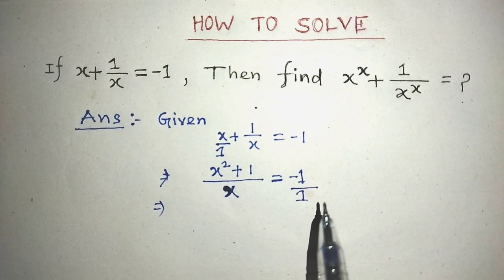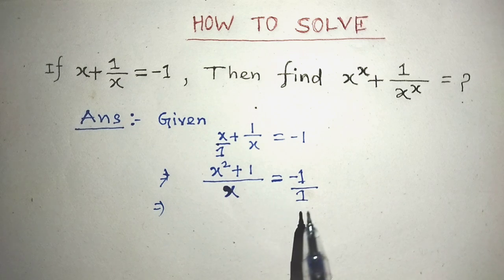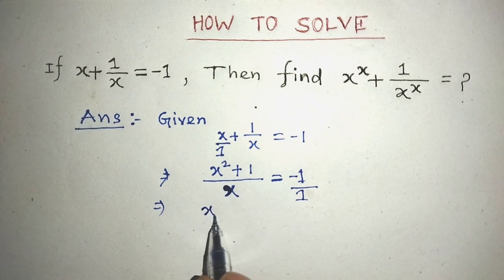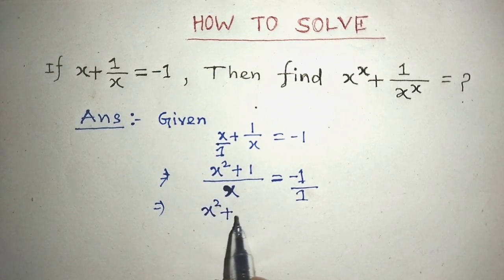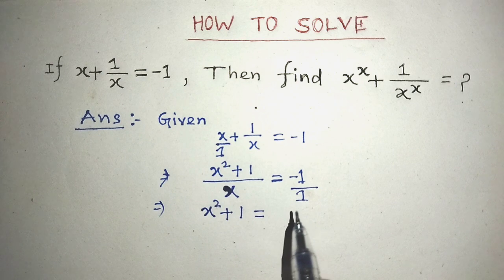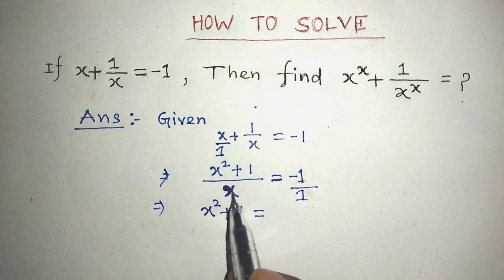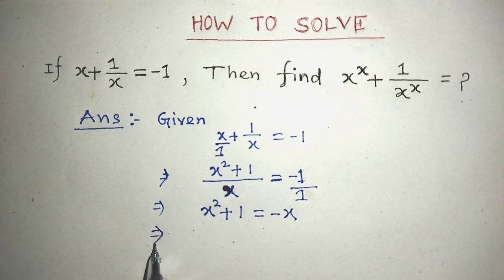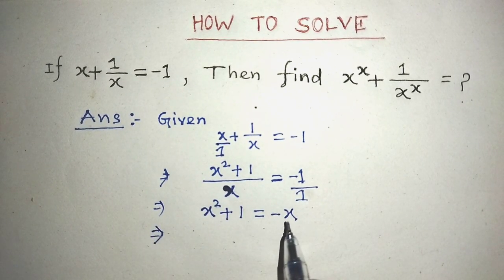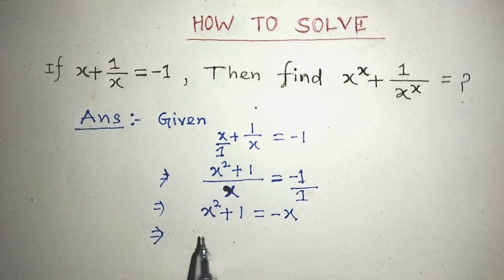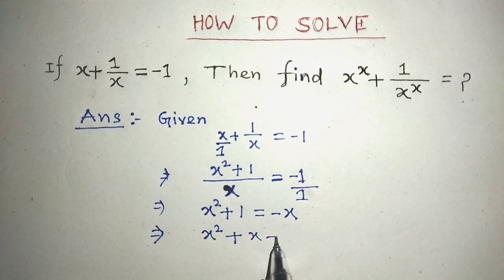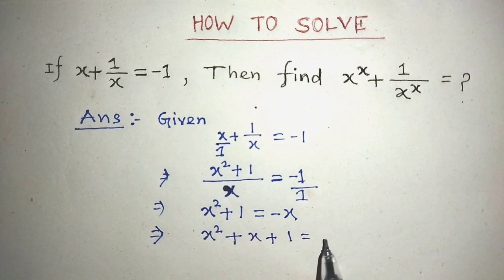After that, we have to apply the cross multiplication rule on this equation. So on the left hand side, we write x squared plus 1 is equal to on the right hand side x into minus 1, that is minus x. After that, we transpose minus x from the right side to the left hand side, so we write x squared plus x plus 1 is equal to 0.